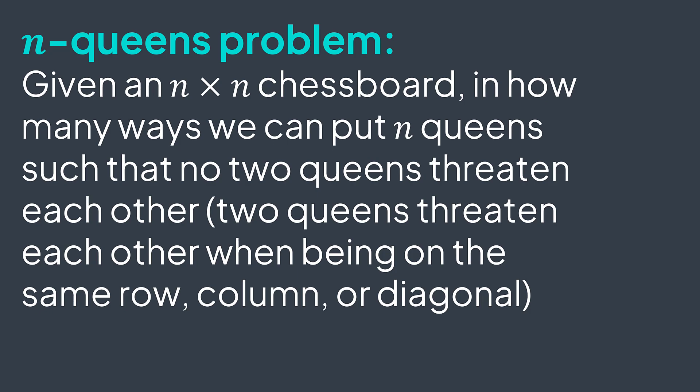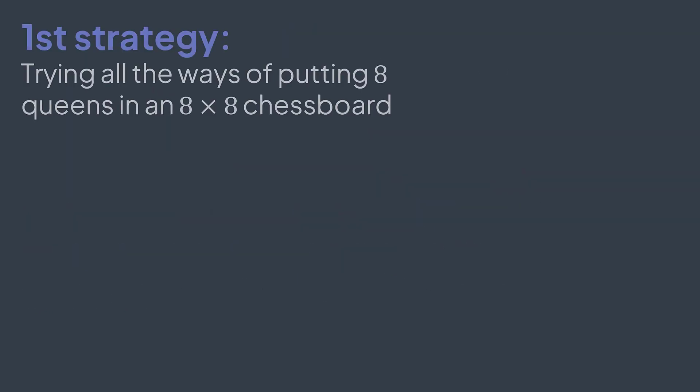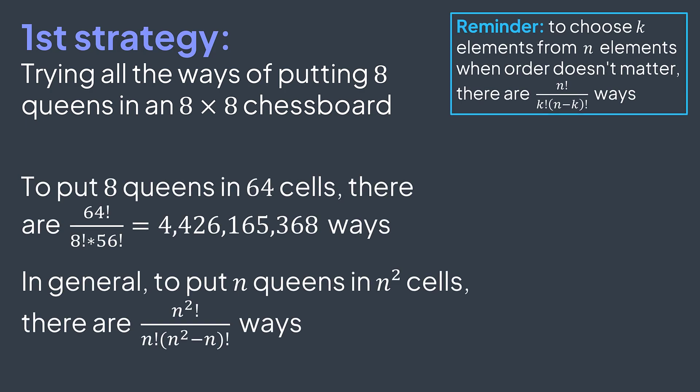The first idea is to try every possible combination of queens and count the ones where there is no threat. We try all the ways of putting eight queens in a 64-cell board, but with combinatorics we find that placing eight queens in 64 empty cells gives us 4 billion, 426 million, 165 thousand, and 368 possibilities — quite a lot.